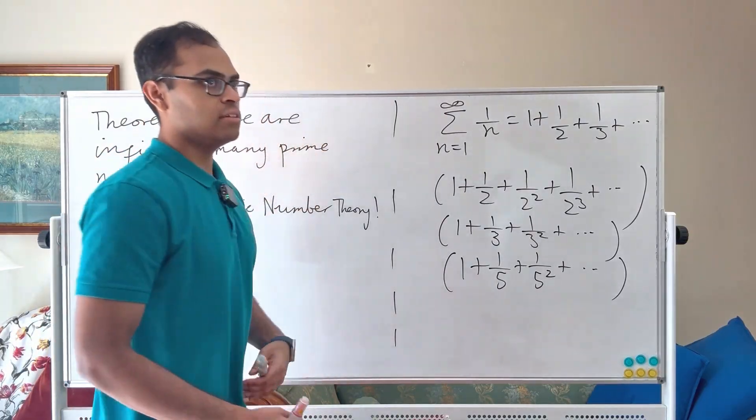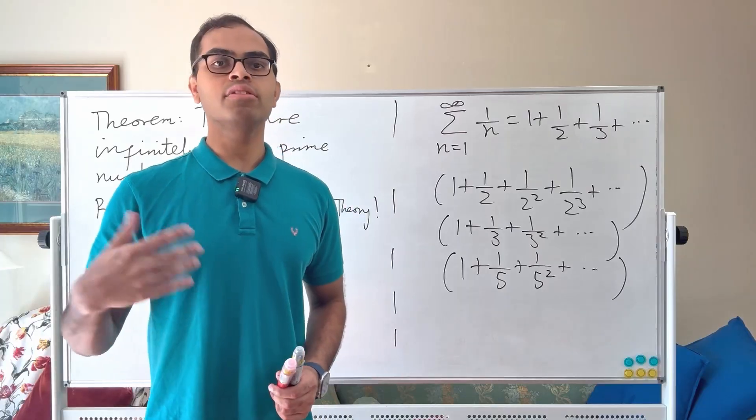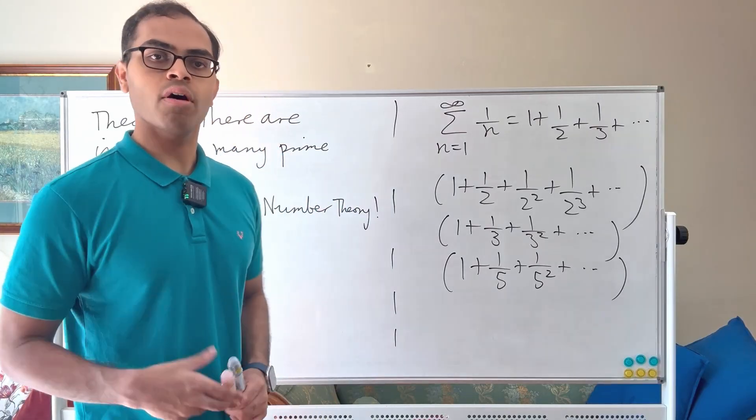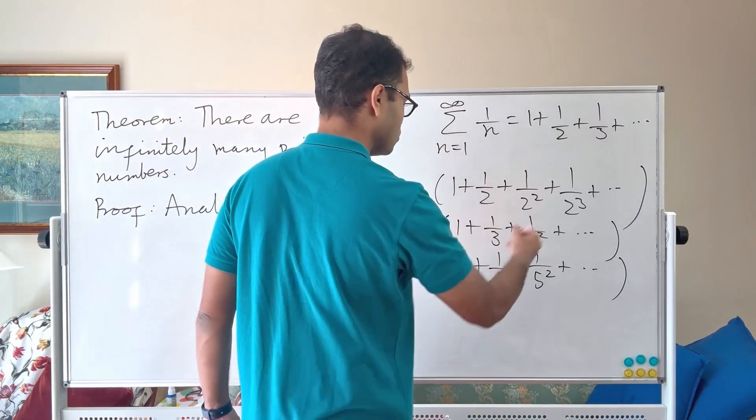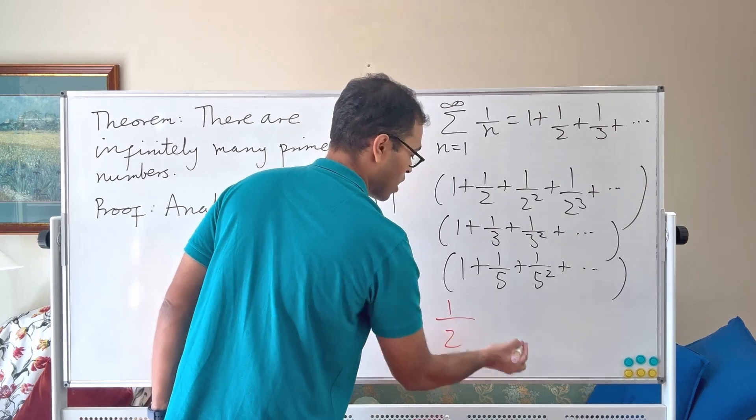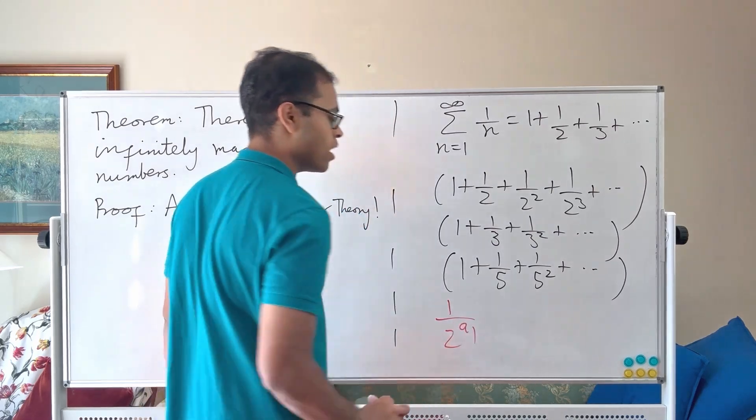So suppose you consider all the prime numbers. P1 through P2 P3 P4 etc. All the prime numbers. So start off with 2. You're going to pick a power of 1 over 2. So 1 over 2 power A1. It's going to be some term here.